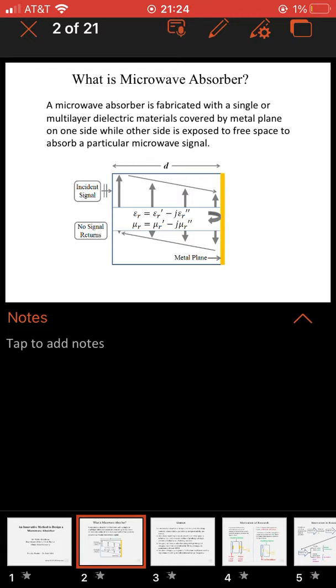When you have good impedance, the incoming signal loses energy as it goes to the metal plane and as it reflects off the metal plane, it continues to lose energy so that no signal returns through the material.